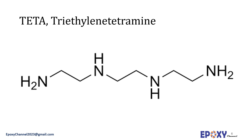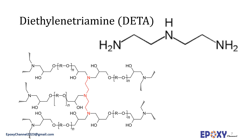Epicure 3223 from Hexion is an example of unmodified TETA available in the market. Diethylenetriamine, or DETA, is another member of this family — a colorless hygroscopic liquid with an ammoniacal odor, soluble in water and polar organic solvents but not simple hydrocarbons. It is a common curing agent for epoxy resins, adhesives, and other thermosets. Its density is 955 g/L, molecular mass is around 103.2 g/mol, amine value is 1626 mg KOH/g, and Epicure 3234 from Hexion is an example of unmodified DETA in the market.